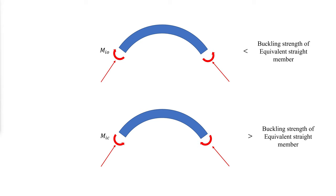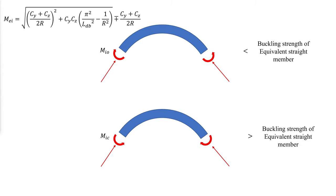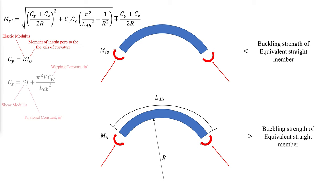For doubly symmetric members with equal end moments, the elastic critical lateral torsional buckling moment is calculated as follows, where LDB is the developed arc length along the arc between points that are either braced against lateral displacement of the compression flange or braced against twist of the cross section, and CY and CZ are calculated as follows. The positive root in the equation is for closing moments, and the negative root is for opening moments.